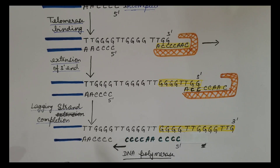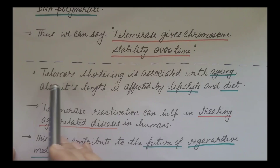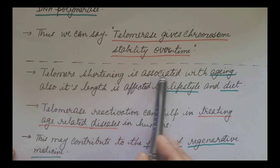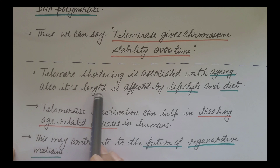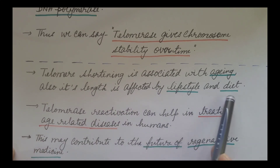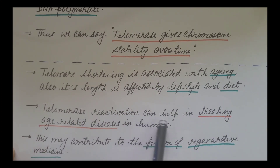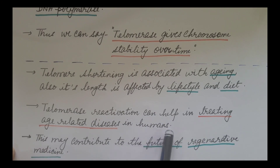Telomere shortening is associated with aging, and telomere length is also affected by lifestyle and diet. Telomerase reactivation can help in treating age-related diseases in humans, and this may contribute to the future of regenerative medicine.